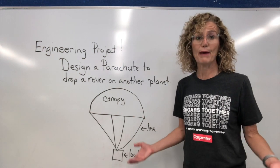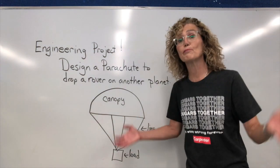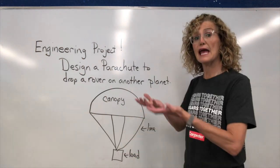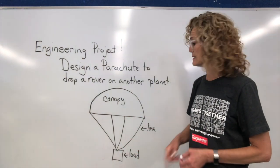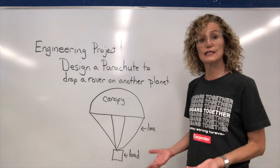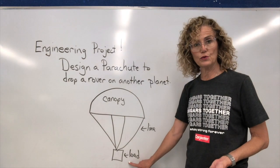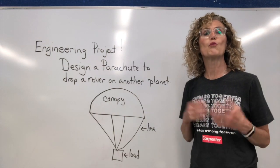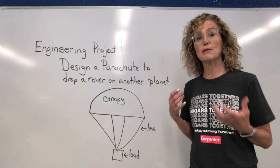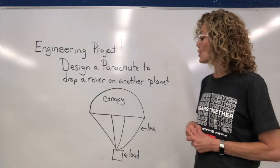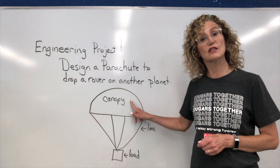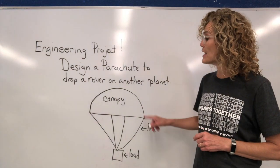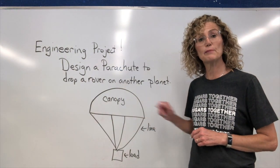In order for us to design a parachute, we need to know what are the parts of a parachute. It has a canopy, and that catches the air and provides air resistance. It has these lines, or string, and it has a load. So in order to test it, we need to look at what things we can test to find out what the best designs are. We can change the size of the canopy, we can change the length of the line, and we can change the material that the canopy is made out of.